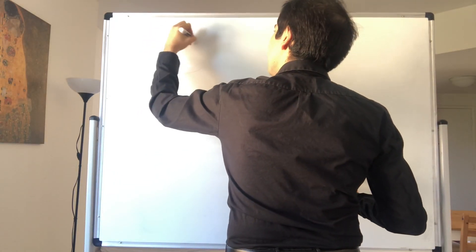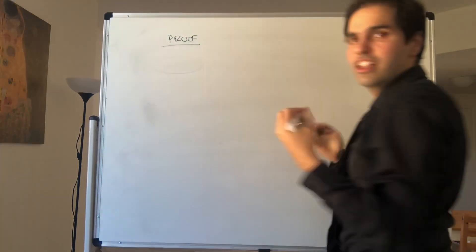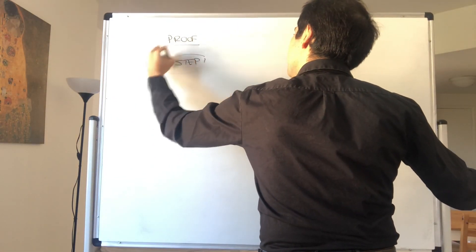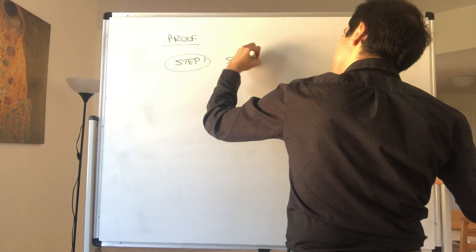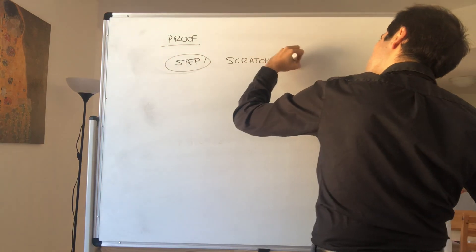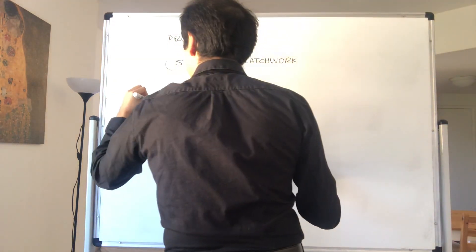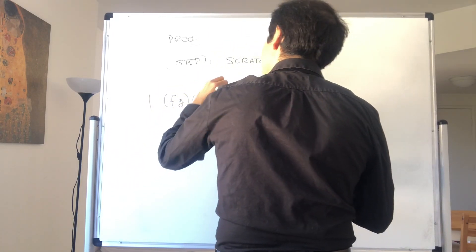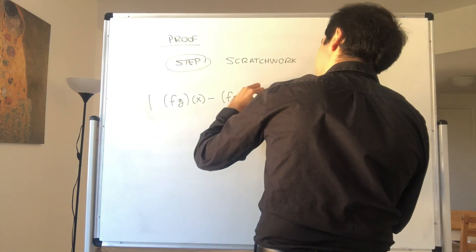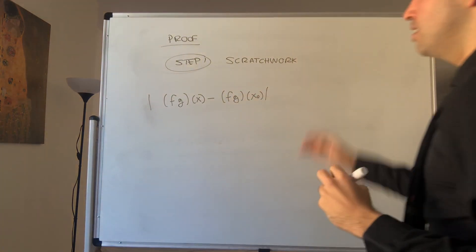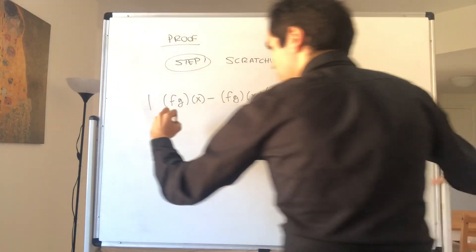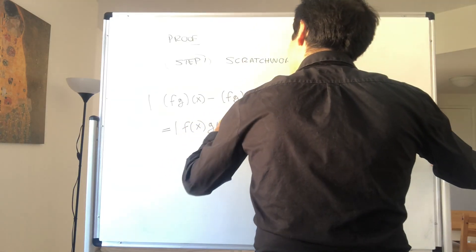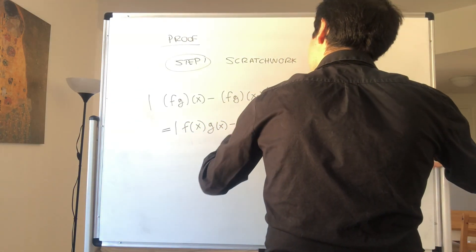Proof. Here we need to do a little bit of scratch work because the proof isn't that obvious, so step one is just scratch work. What we need to do is estimate |fg(x) - fg(x₀)|. By definition, this is |f(x)g(x) - f(x₀)g(x₀)|.